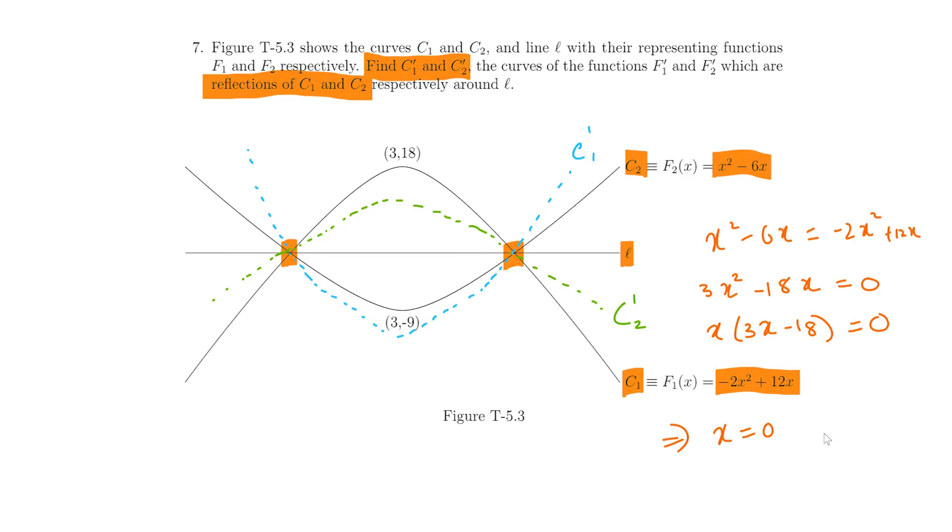That indicates x is equal to 0 or x is equal to 6. So, this point has coordinate x is equal to 0 and this point has coordinate x is equal to 6. We need to find the y coordinates for these points now. For that we substitute x is equal to 0 and we get y is equal to 0.